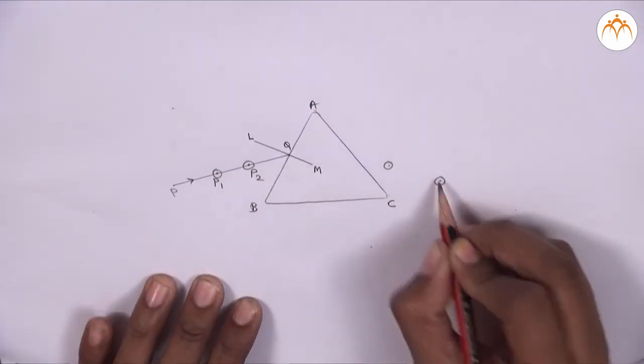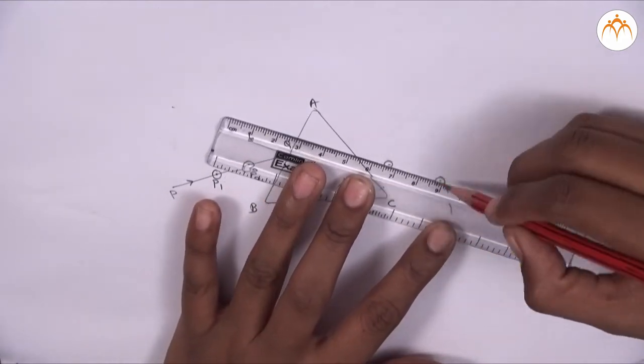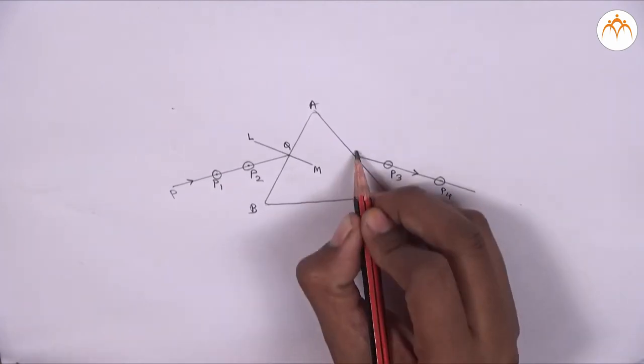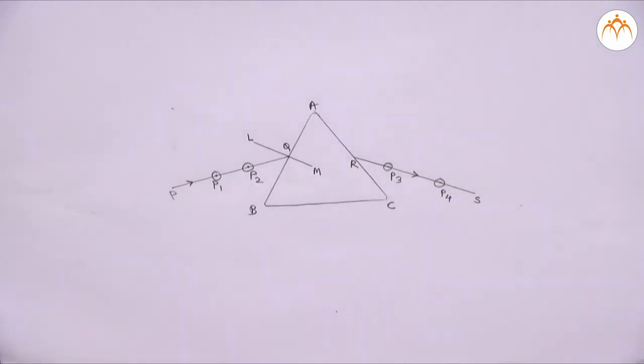Draw a line towards side AC through the points of pins P3 and P4. Call them S and R. It will intersect AC at point R.